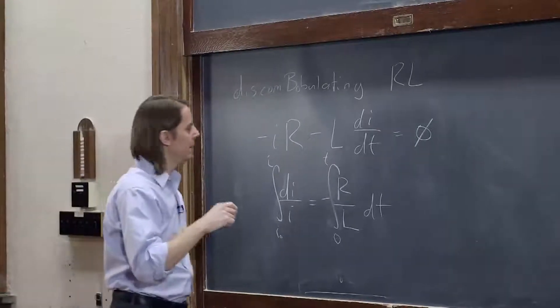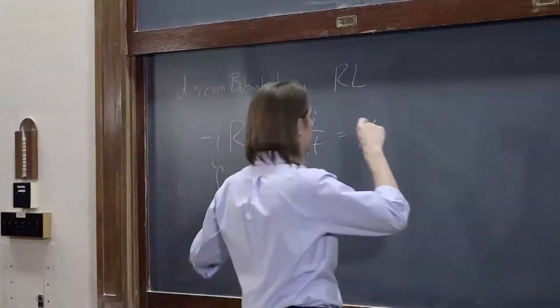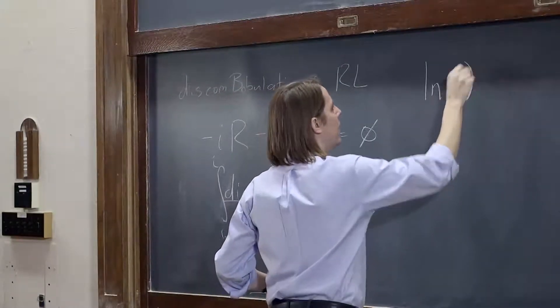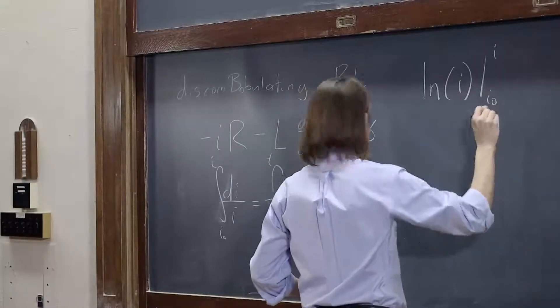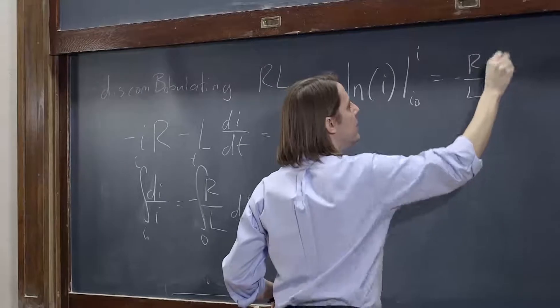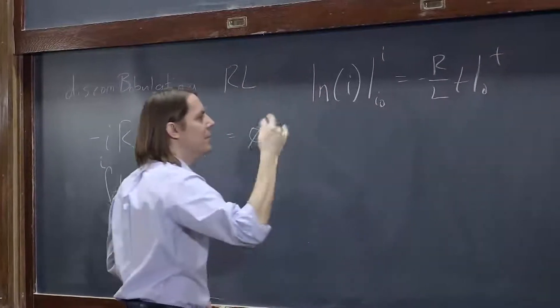Now we just have to integrate both sides. So this, we've done that integral a few times. It's the natural log of i evaluated from i0 to i. And this one is minus R over L t, evaluated from 0 to t. And we've seen this before.